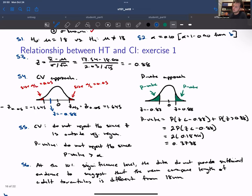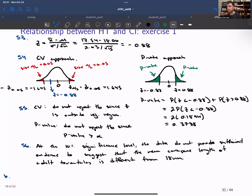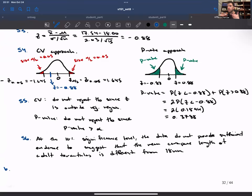The result in A is saying that there is no evidence to suggest that the mean carapace length is different from 18. So this is saying that there is evidence that 18 could be the mean carapace length. So 18 is a possible value. The interval runs from 16.68 to 18.4, so the interval includes 18. Therefore, the interval is saying that 18 is a possible value, and the hypothesis test is saying that 18 is a possible value. Hence the results are the same.